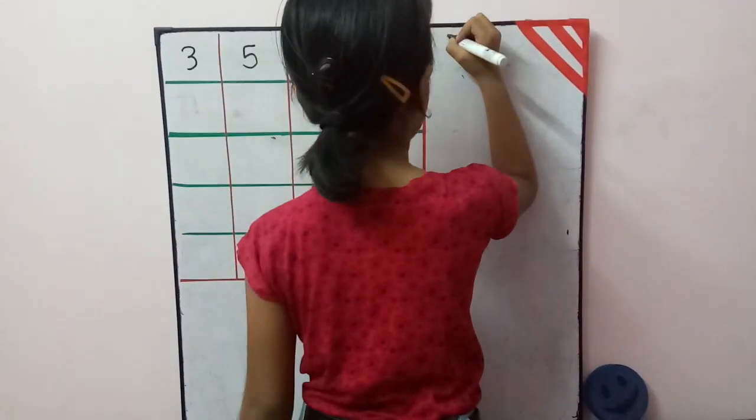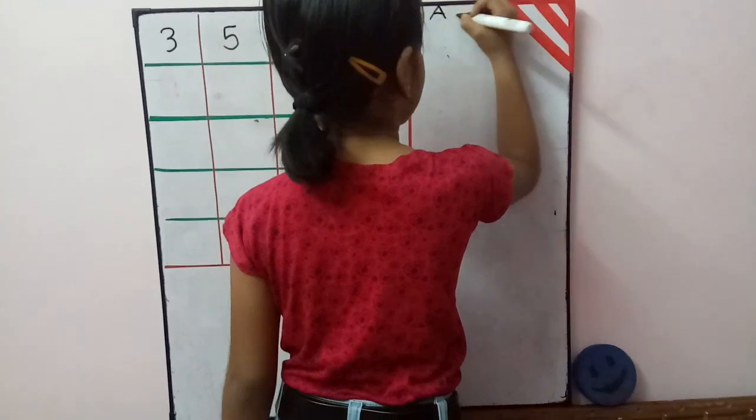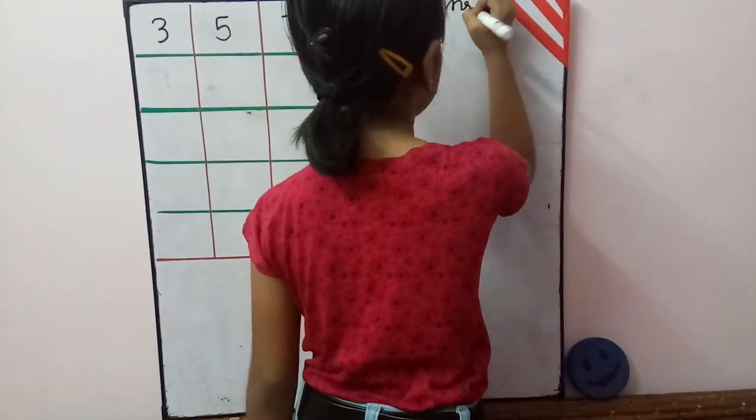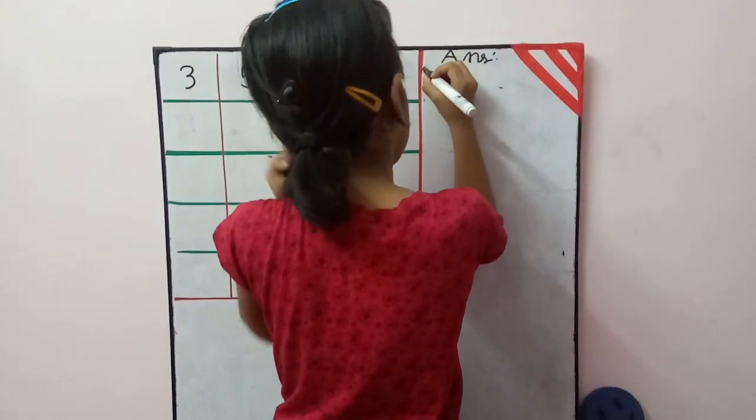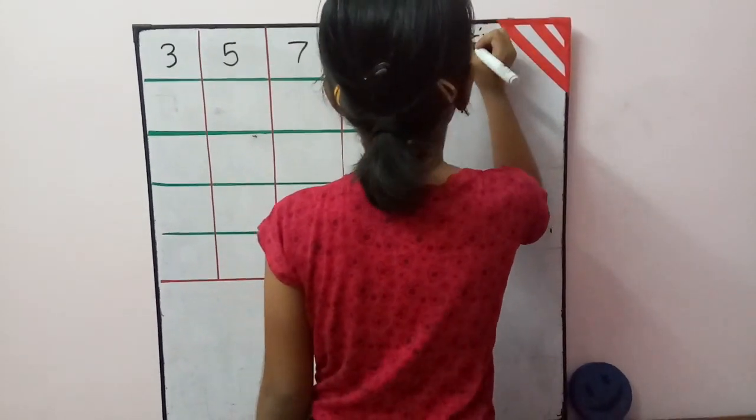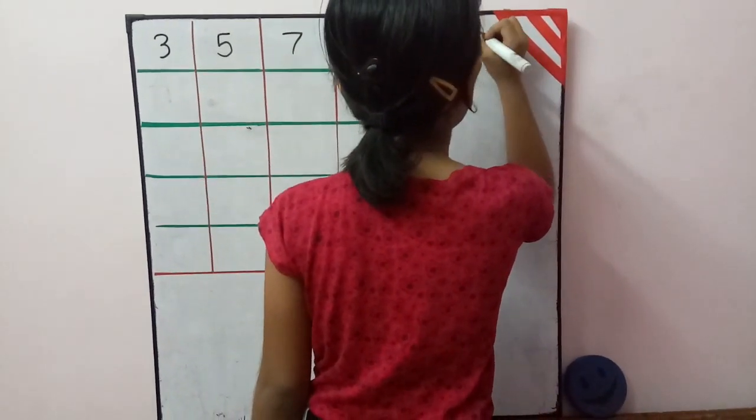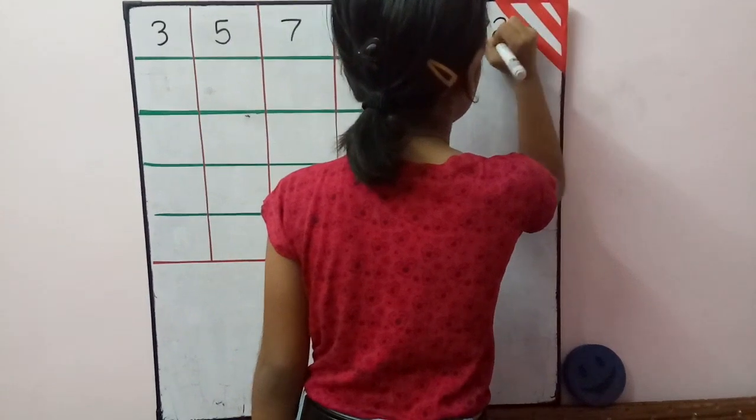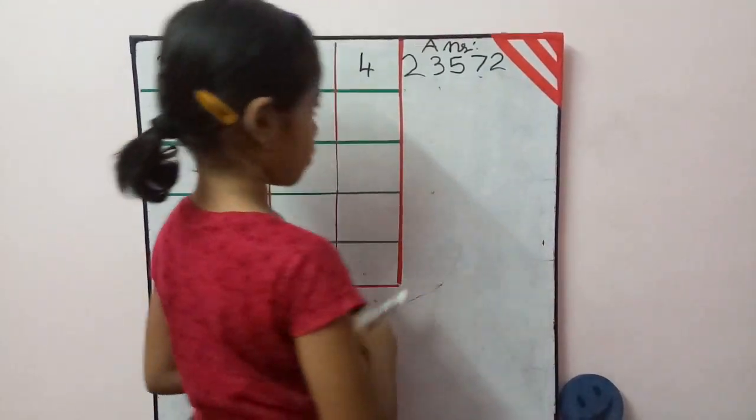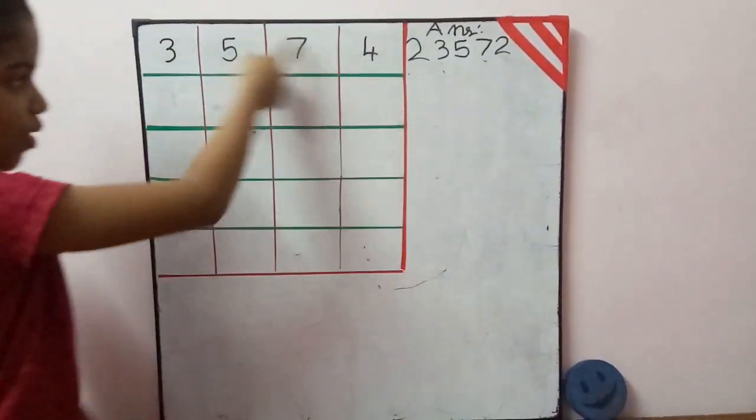Now I write the answer. 2, 3, 5, 7, 2. This is the final answer for this trick.